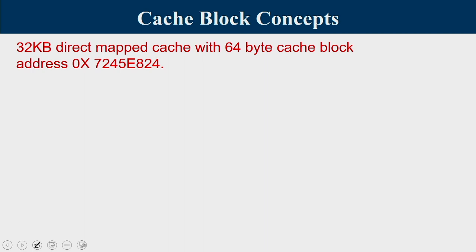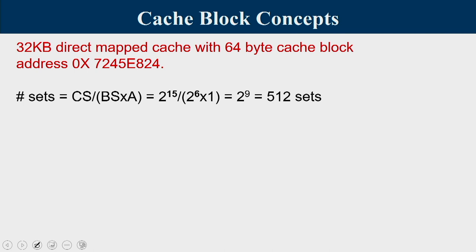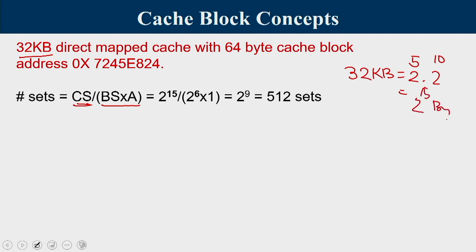For a 32KB direct mapped cache with 64-byte cache blocks, first find the number of sets. Number of sets equals cache size divided by block size times associativity. Cache size is 32KB = 2^15 bytes. Block size is 64 = 2^6 bytes. Associativity is 1 for direct mapped. So number of sets = 2^15 / 2^6 = 2^9 = 512 sets.